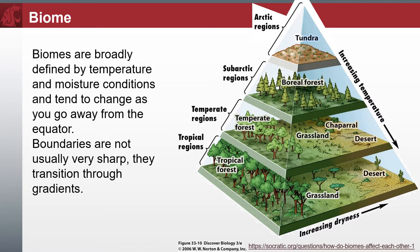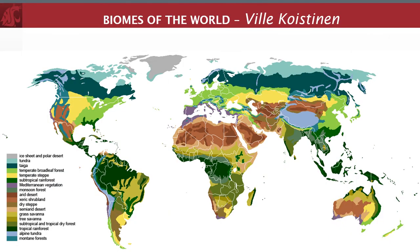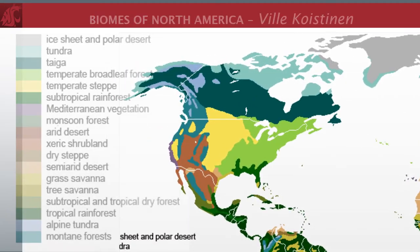Biomes are broadly defined by temperature and moisture conditions, and tend to change as you go away from the equator. They respond to temporal and spatial conditions where change is persistent. We see gradual changes where plants, fungus, and animals seek continuity of survival. Fundamentally, we use biome concepts to aid our understanding of management techniques suited to the lands we manage. In an attempt to characterize the entire planet into a biome classification, Vili Kuestinen of the University of Oklahoma made a map depicting 18 distinct biomes found around Earth. This presentation is clear, well-reasoned, and informative about the transitions made across each biome.